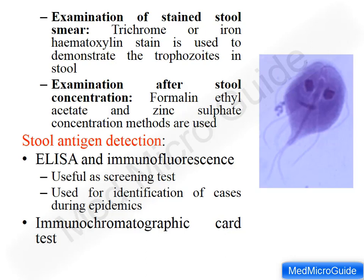The coproantigen or stool antigen test detects Giardia antigen in stool using ELISA or direct immunofluorescence. This is useful for screening and for identifying cases during epidemics. A recent immunochromatographic card test is available for simultaneous detection of antigens of Giardia, Entamoeba histolytica, and Cryptosporidium species, and is commonly used in field settings as it provides results within 10 minutes.